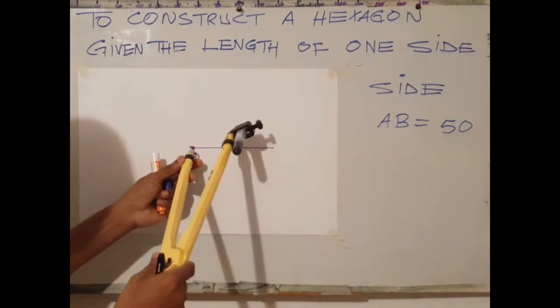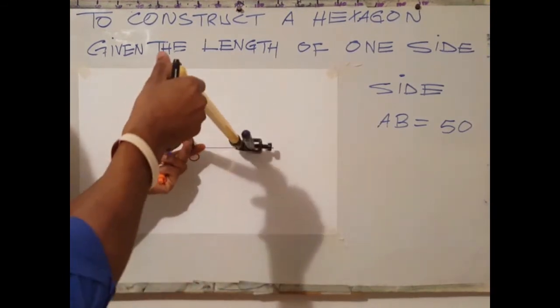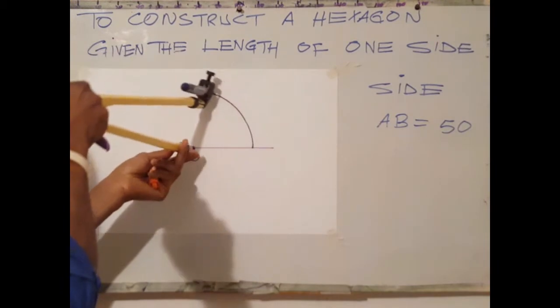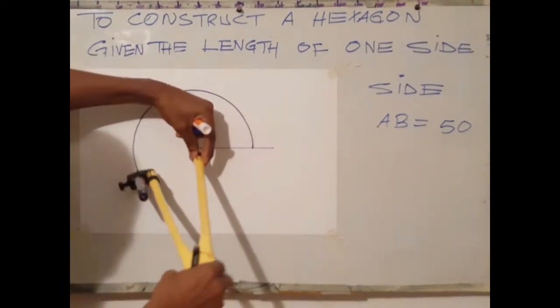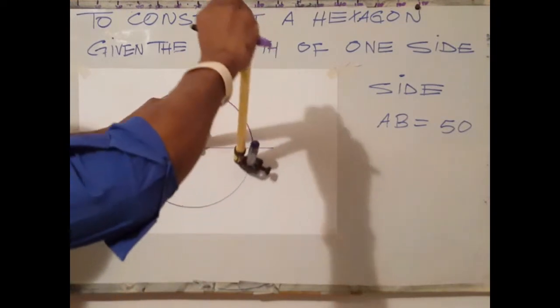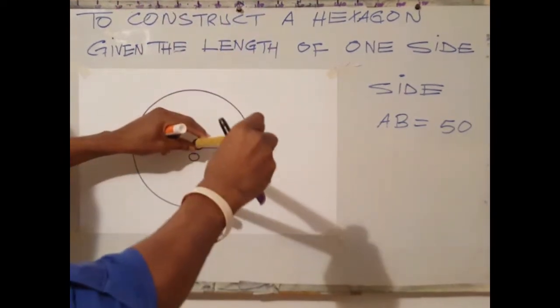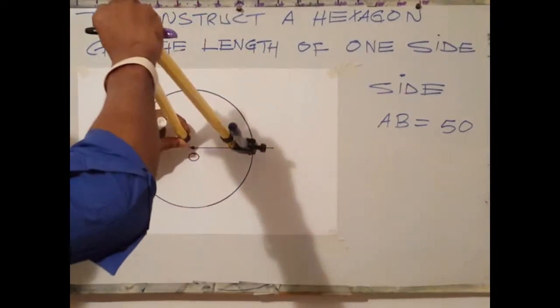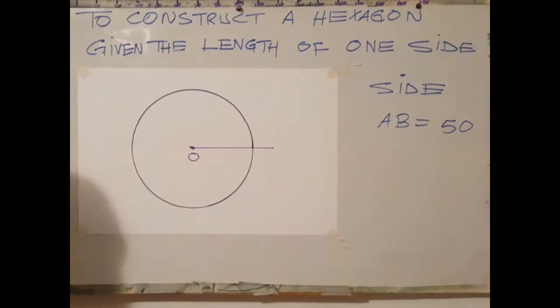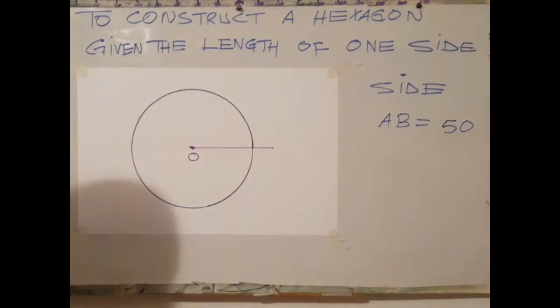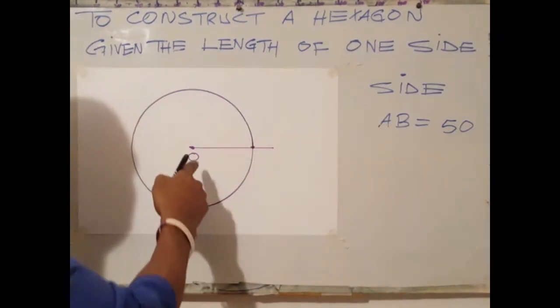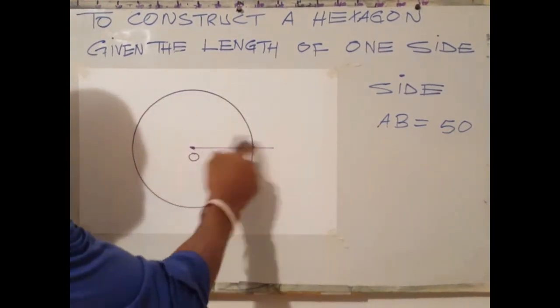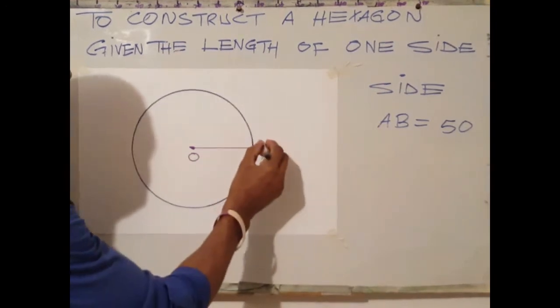With O as center, draw a circle. Now that you have done that, at a point where the circle meets the line that you have drawn, label that point A.